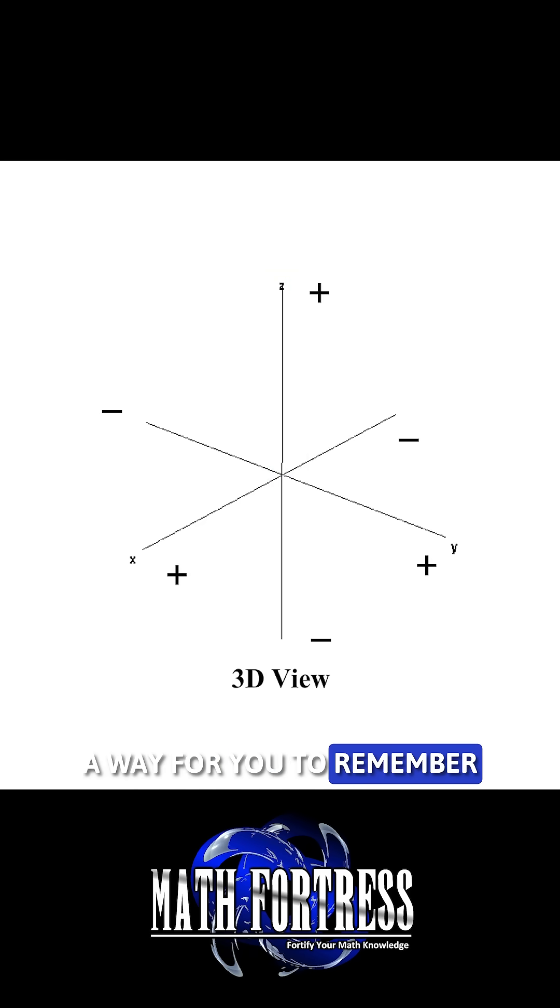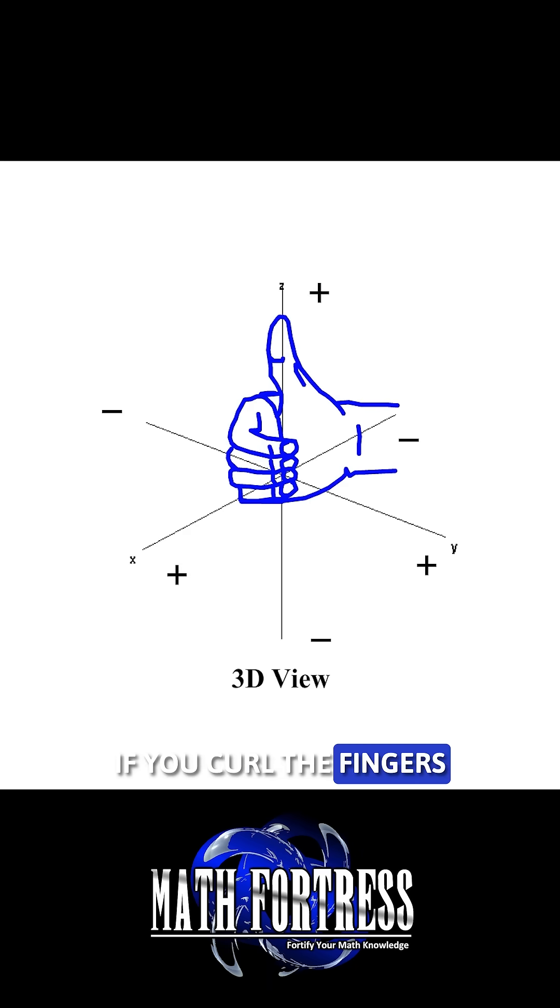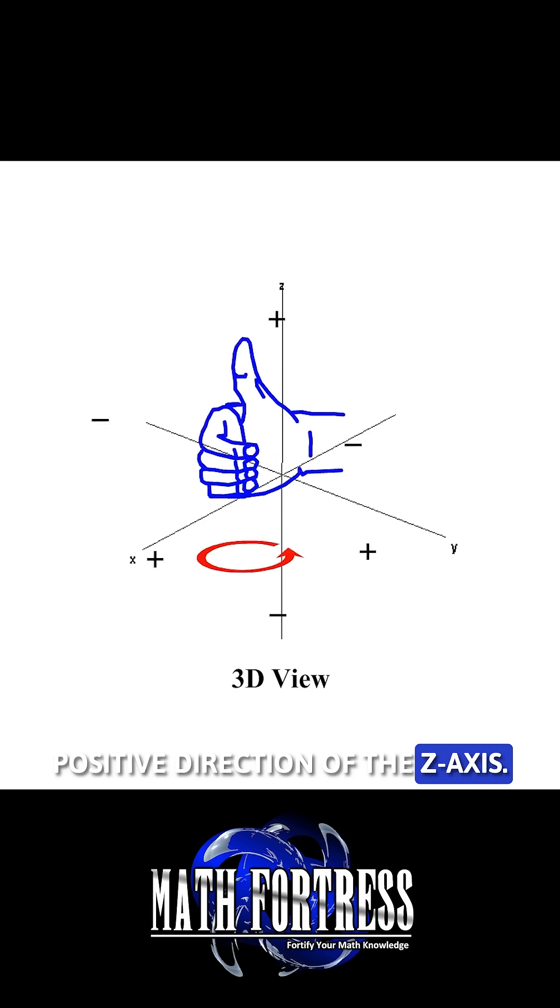A way for you to remember where the direction of the z-axis is located is by using the right hand rule. If you curl the fingers of your right hand around the z-axis counterclockwise from the positive x-axis to the positive y-axis, then your thumb points towards the positive direction of the z-axis.